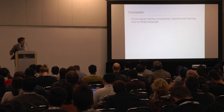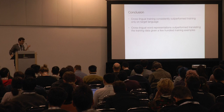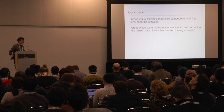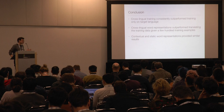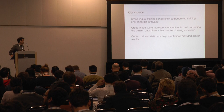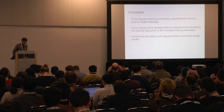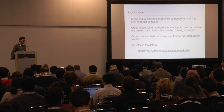To sum up: cross-lingual training consistently outperformed training only on the target language data. We found that cross-lingual word representations outperformed the translation approach when we had a few hundred training examples. Contextual and static word representations provided similar results, though we didn't do very thorough hyperparameter tuning of our contextual word representations, so there may still be gains there. Importantly, we also released the entire dataset, so if you're interested in this space and want to try new models, we provide this dataset for you to test on.